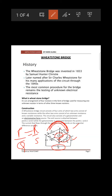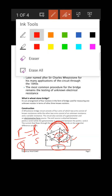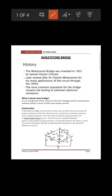You can also understand it in reverse: if no current is passing through the galvanometer — meaning no deflection is shown — then P/Q equals R/S. The Wheatstone bridge is said to be in balanced condition when P/Q = R/S.